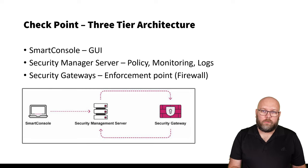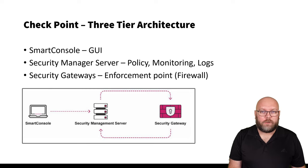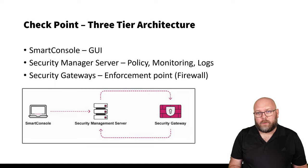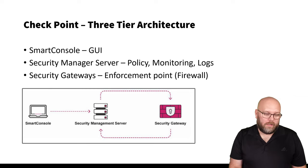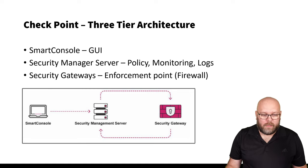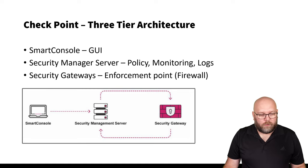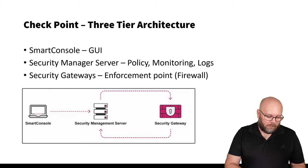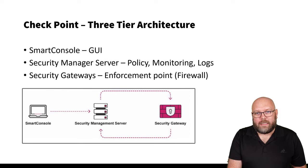When we're talking about Check Point architecture, normally we're referring to the three-tier architecture, which is the Smart Console — the GUI where you can see and make all your changes — then we have the Security Management Server that actually holds the policy, the monitoring, and the logs, controlling the firewalls. Then we have the Security Gateways, which are the enforcement points. 'Security Gateway' is Check Point's word for a firewall. The Smart Console connects to the management station, which connects to the Security Gateway, and the firewall sends responses back to the Security Management Server to be presented in the Smart Console.